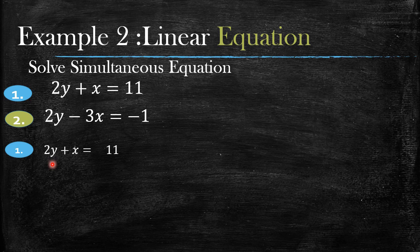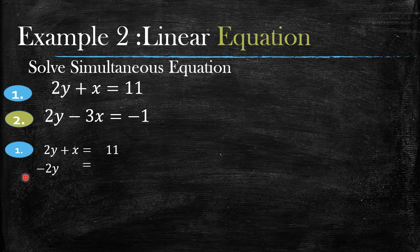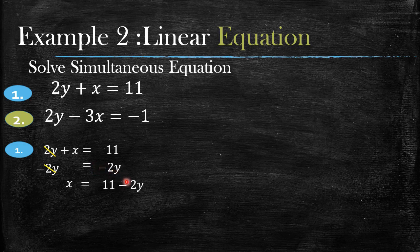We rearrange the first equation to make x the subject of the formula. To get x alone, we cancel out positive 2y by subtracting 2y from both sides. Two minus two cancels out, and x is left. On the other side: 11 minus 2y equals 11 minus 2y. Now that we know x equals 11 minus 2y, we can substitute this as the x value in our second equation.